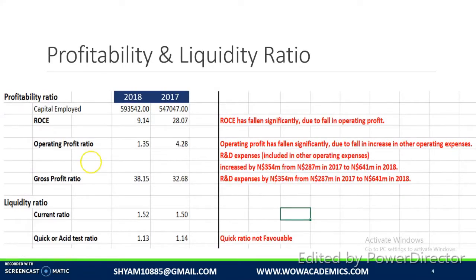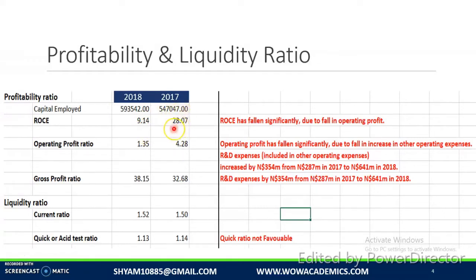We will be discussing about the profitability and liquidity ratios here. I have calculated the profitability ratio for 2018 and 2017 and given my comments on this slide. The ROCE of the company has actually fallen from 2017 to 2018. In 2017 the ROCE was 28% and it has fallen drastically to 9%.